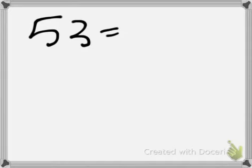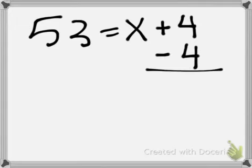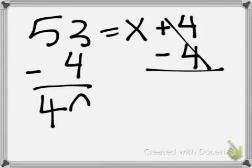We're going to do another example. Let's do 53 equals x plus 4. To do the inverse operation on this, we're going to subtract 4 from this, making it 0, and subtract 4 from this, making that 49.